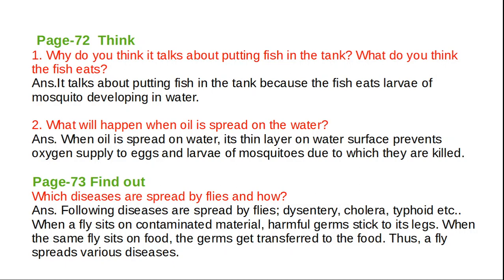Now page number 73: which diseases are spread by flies and how? The following diseases are spread by flies: dysentery, cholera, typhoid, etc. When a fly sits on contaminated material, harmful germs stick to its legs. When the same fly sits on food, the germs get transferred to the food. Thus, a fly spreads various diseases.